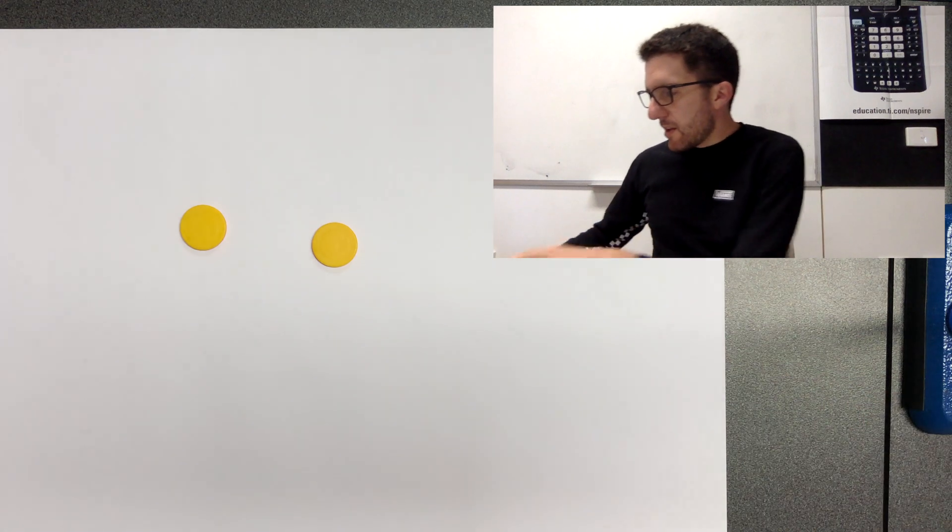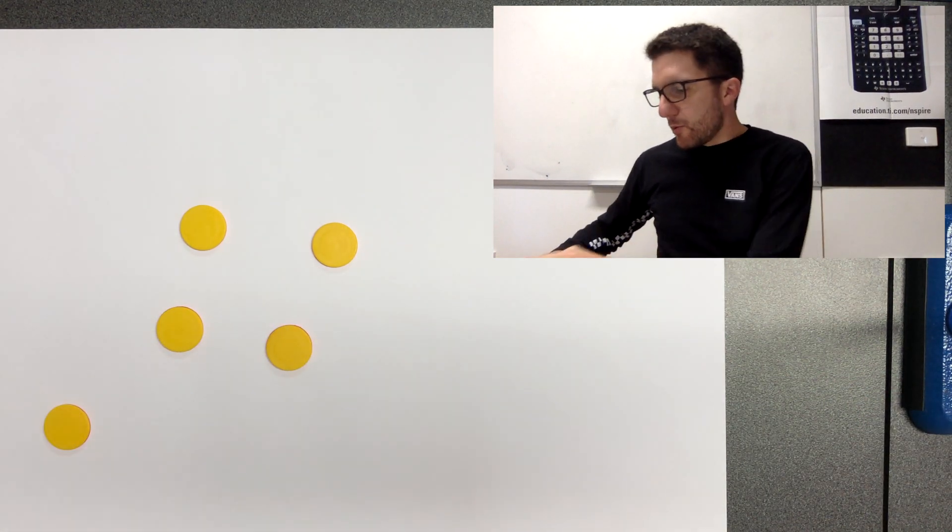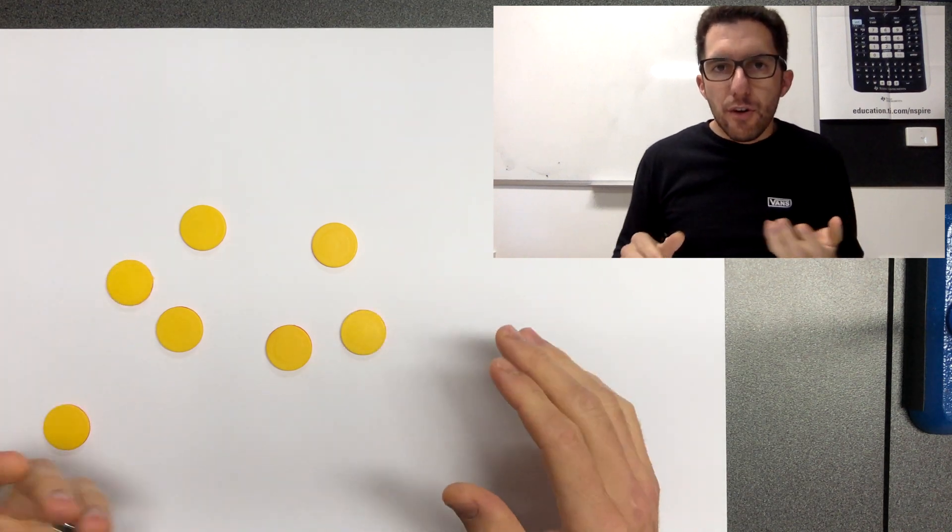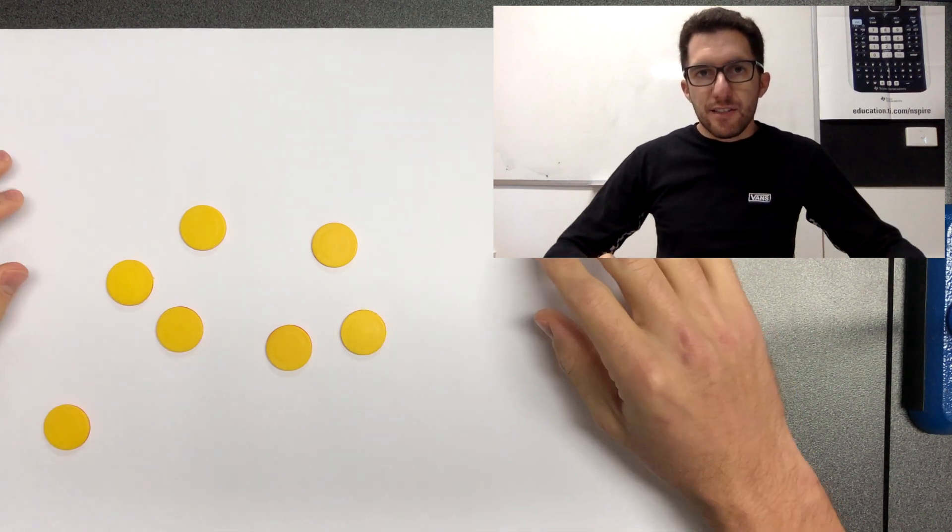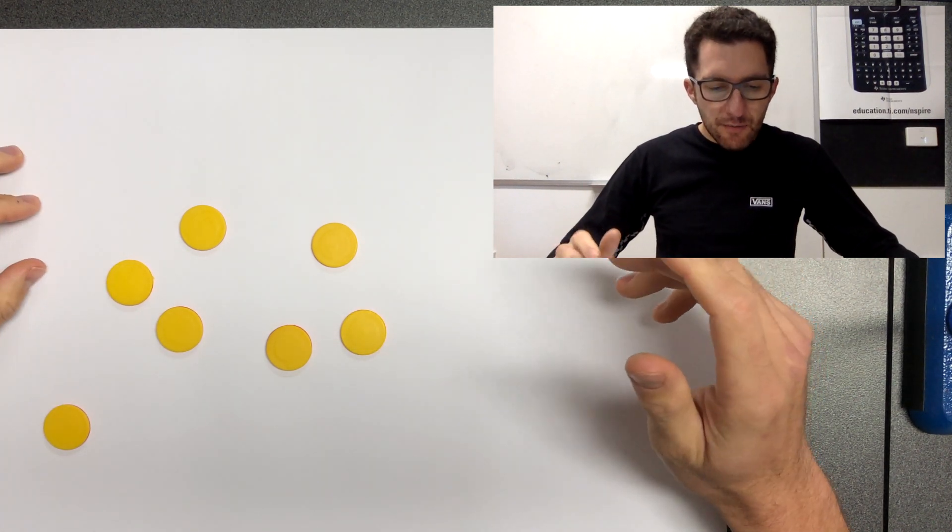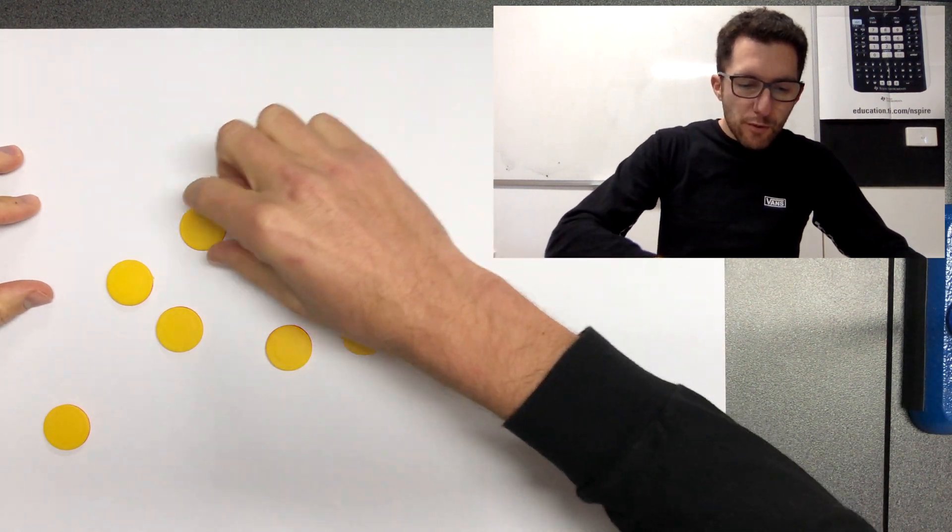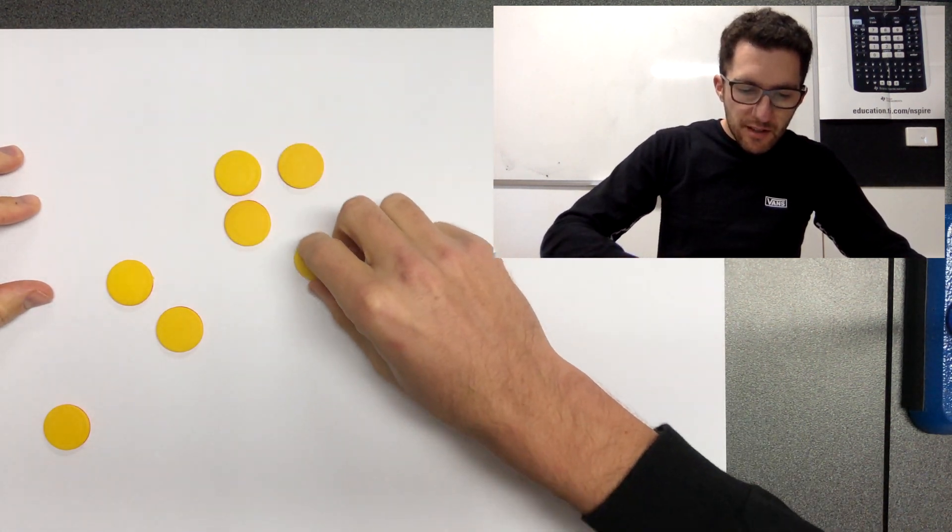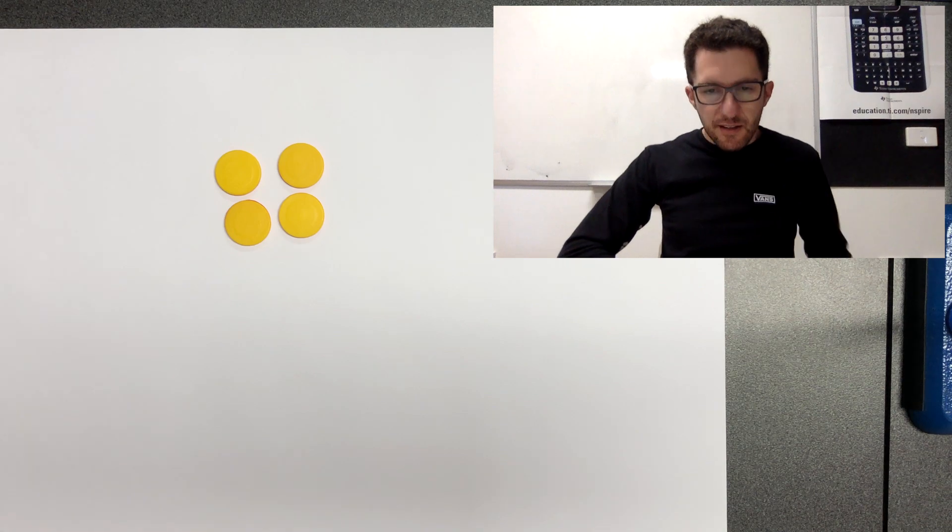So to start off with, let's start with something really simple. I've got some counters here and I want to make the number four. So how can I make the number four with these counters? I think it's pretty simple, isn't it? I just moved four of these counters together and there's the number four.